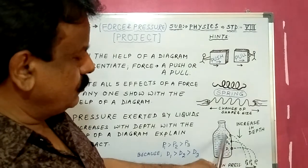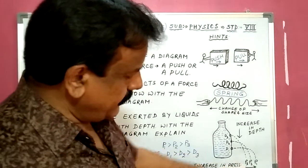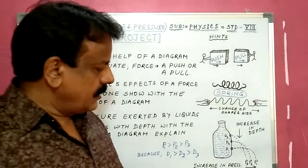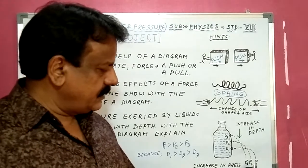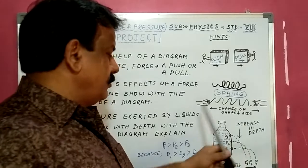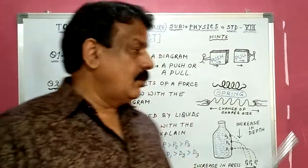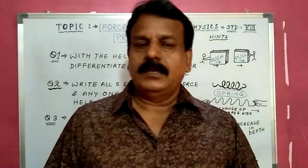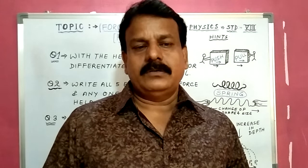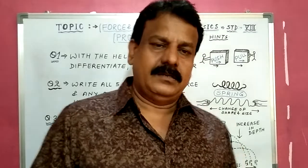Downward, depth increases: D3 is the least depth, D2 is more, and D1 is the greatest depth. Horizontally, pressure increases: P3 is the least pressure, P2 is more than P3, and P1 is the highest pressure. Draw this figure and write this activity in your own words. All three questions are important for your coming exam for marks.